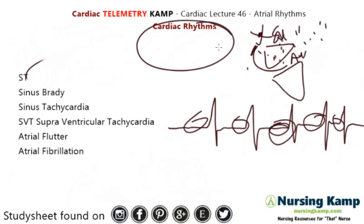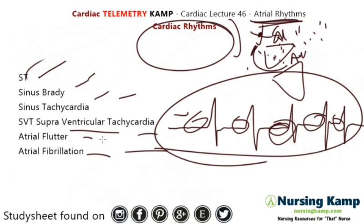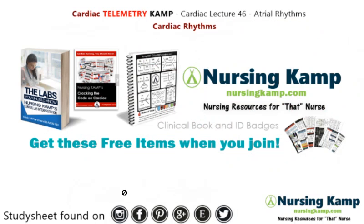So this is a general overview of atrial rhythms: sinus tach, sinus brady, sinus SVT, atrial flutter, and atrial fib. I have individual videos on each of these, so please see those. This will give you your atrial rhythms and what your basic treatments are. When the NCLEX is testing you on it, you'll basically need to know the basics of this. That's it for me. I'm Nursing Camp, this is Kevin, and I can be found on Instagram, Facebook, Pinterest, Etsy, and NursingCamp.com. We'll see you next time. Thank you.